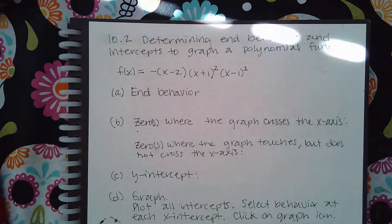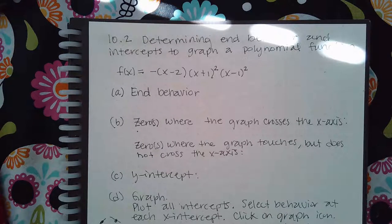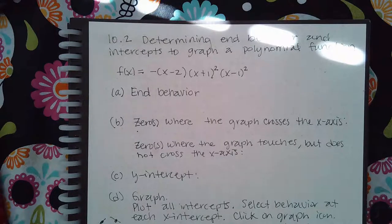This is 10.2, determining end behavior and intercepts to graph a polynomial function. It's much easier to graph on paper than in the computer, so I always suggest everyone do it on paper first and then make sure whatever you're clicking on in the computer matches what you had on paper. You want to get into the habit of graphing on paper because when you turn in your test for your midterm or final you have to write your work on paper. If the computer counts you wrong, I can still see that you did it on paper and give you some credit.